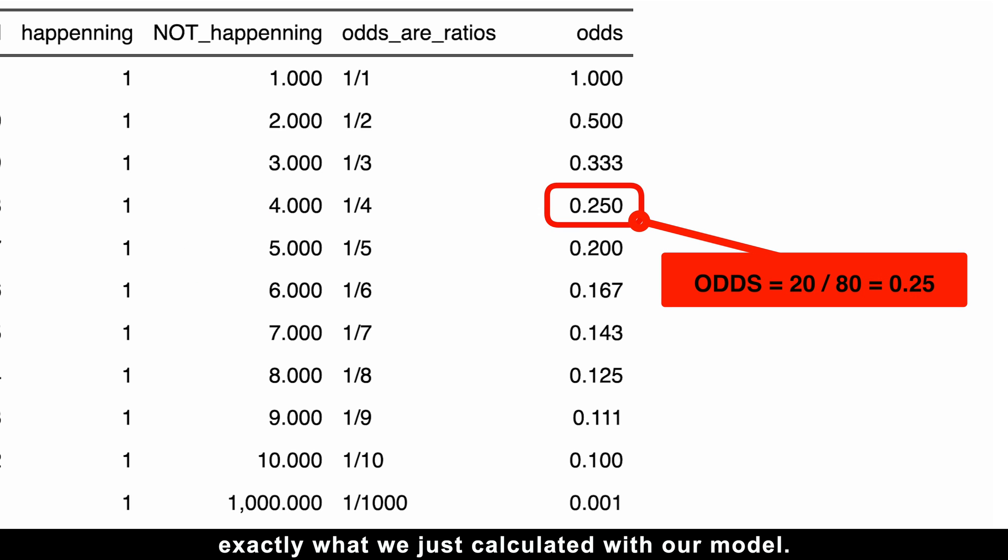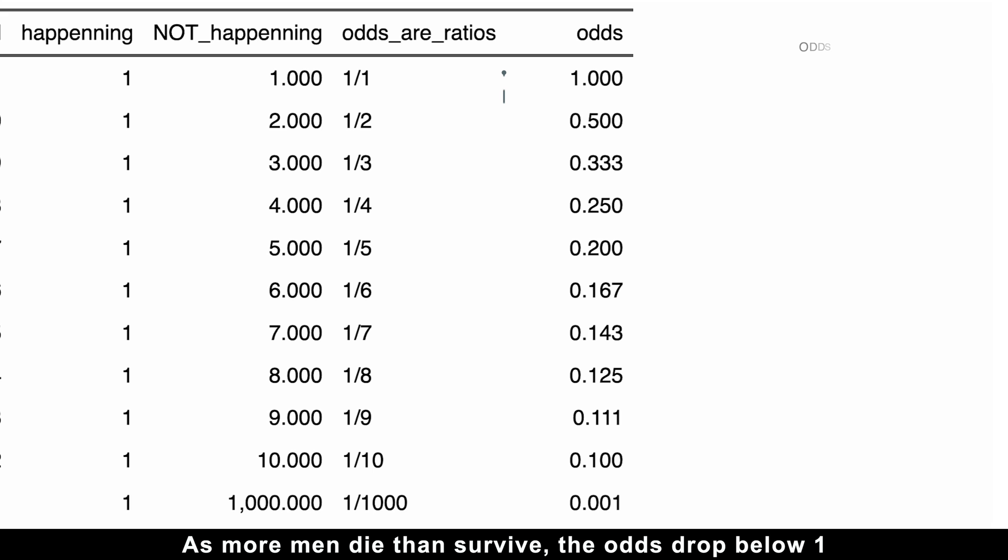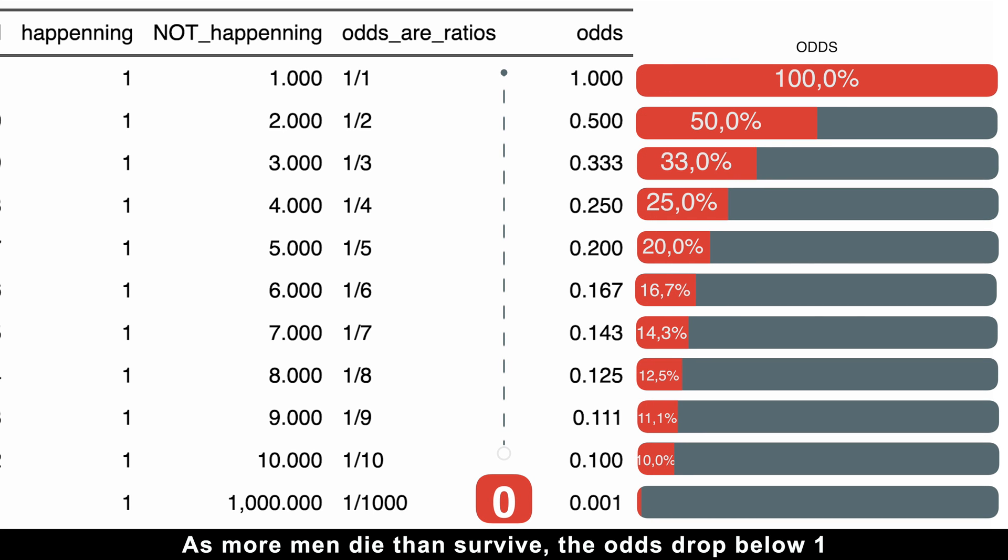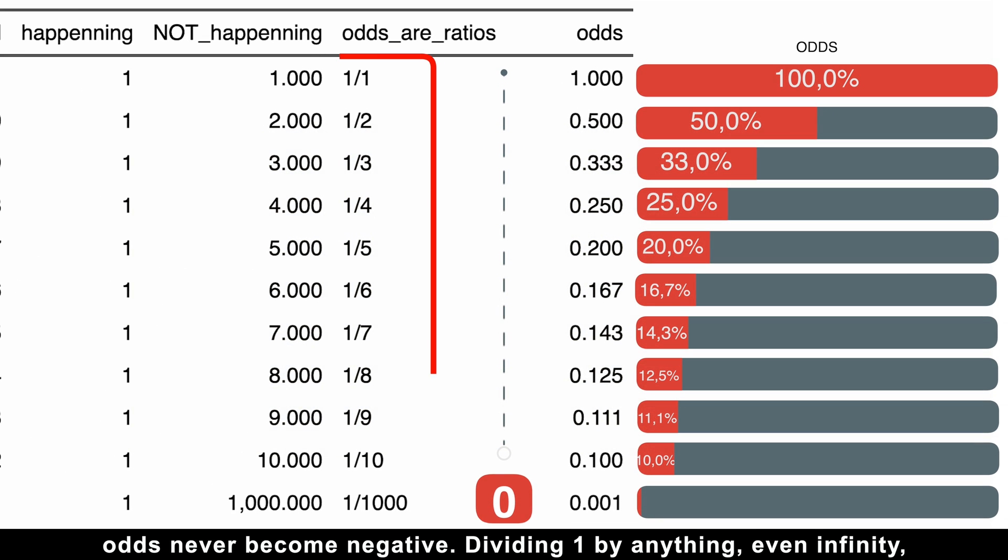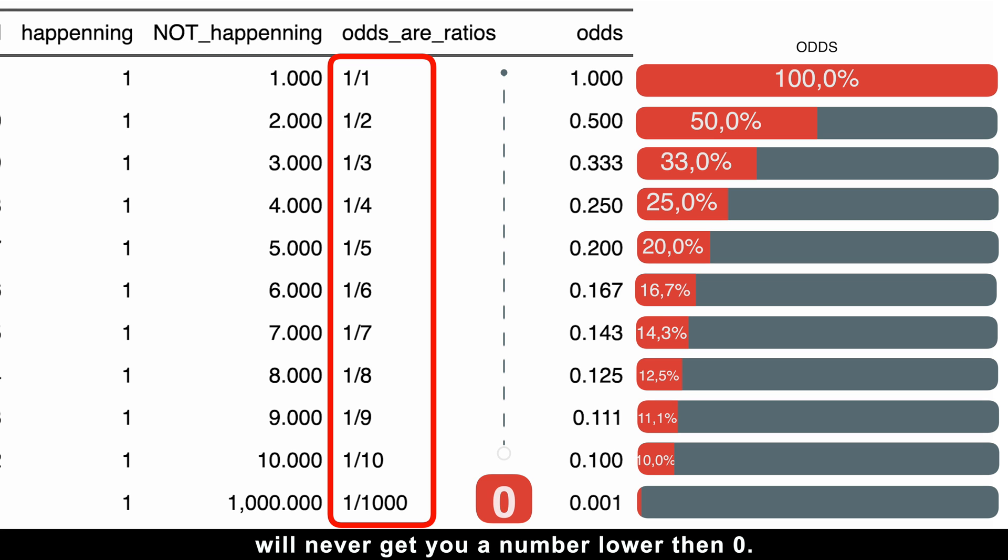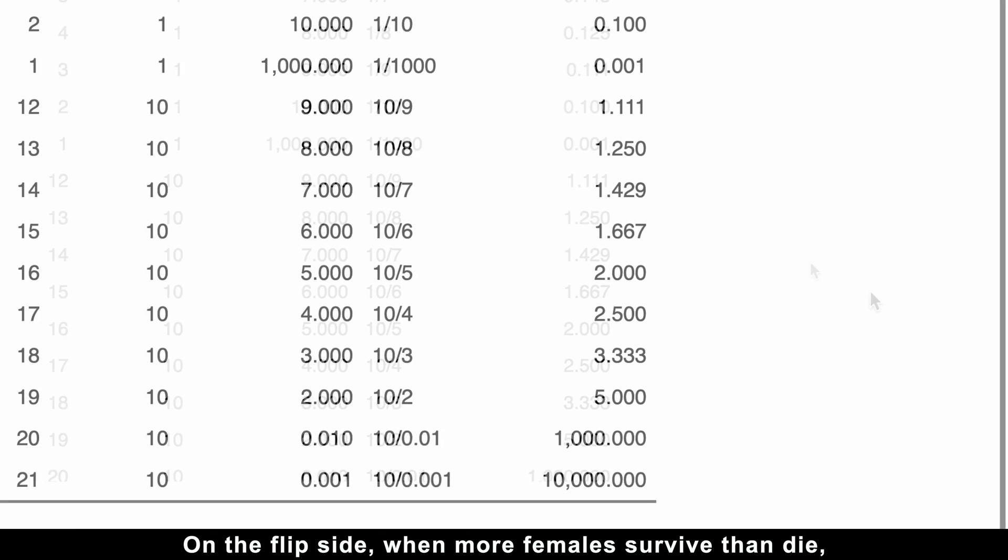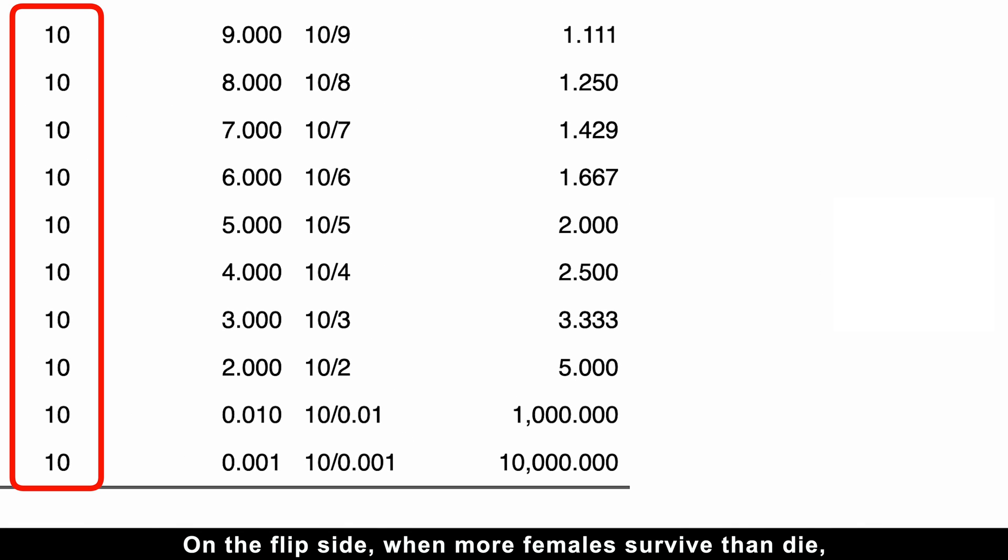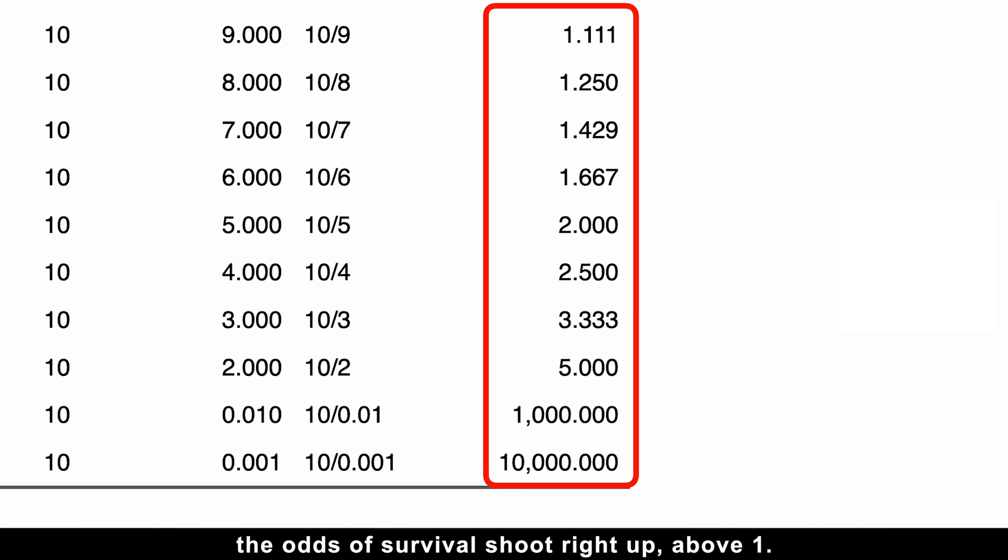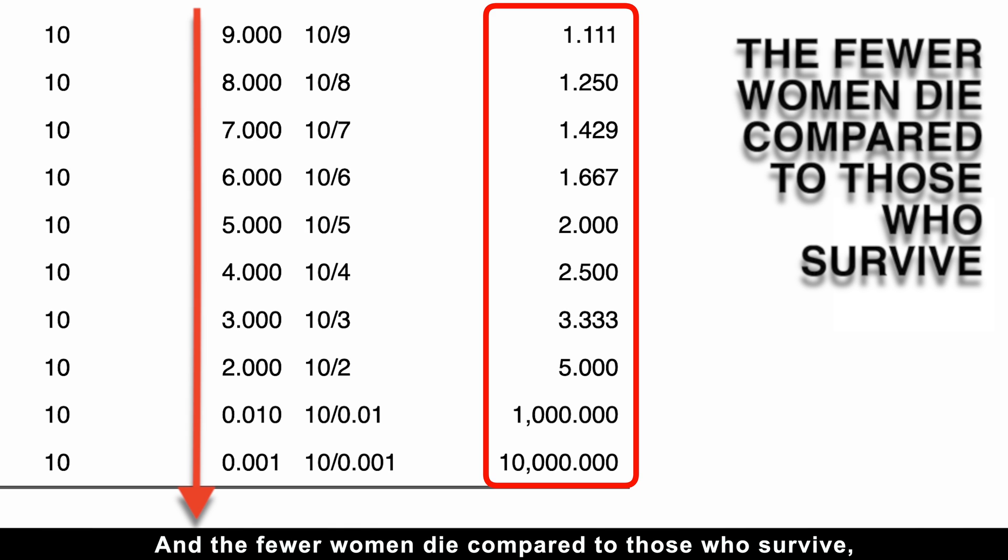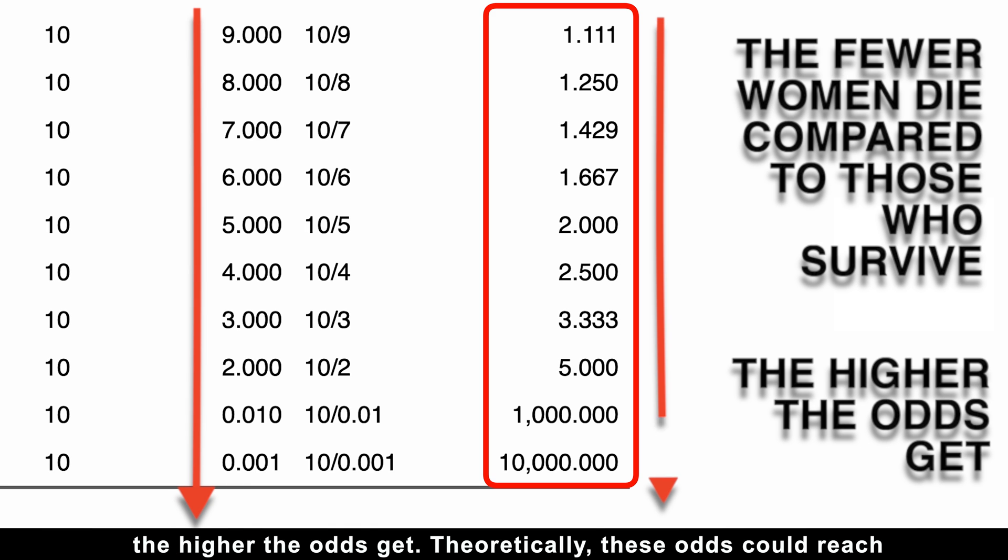As more men died than survived, the odds drop below one and approach zero. But no matter how small this ratio gets, odds never become negative. Dividing one by anything, even infinity, will never give you a number lower than zero. On the flip side, when more females survive than die, the odds of survival shoot right up above one.